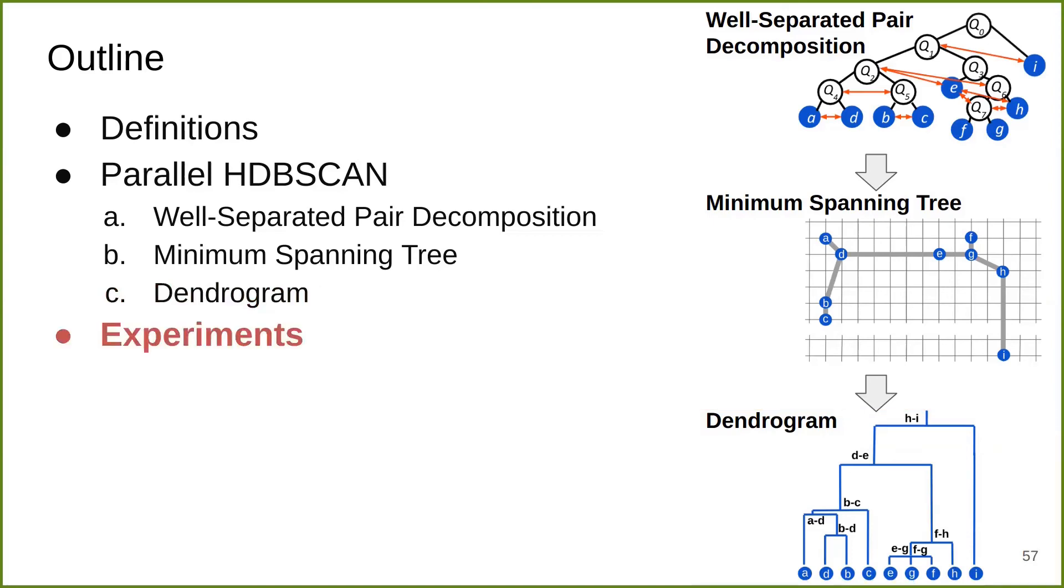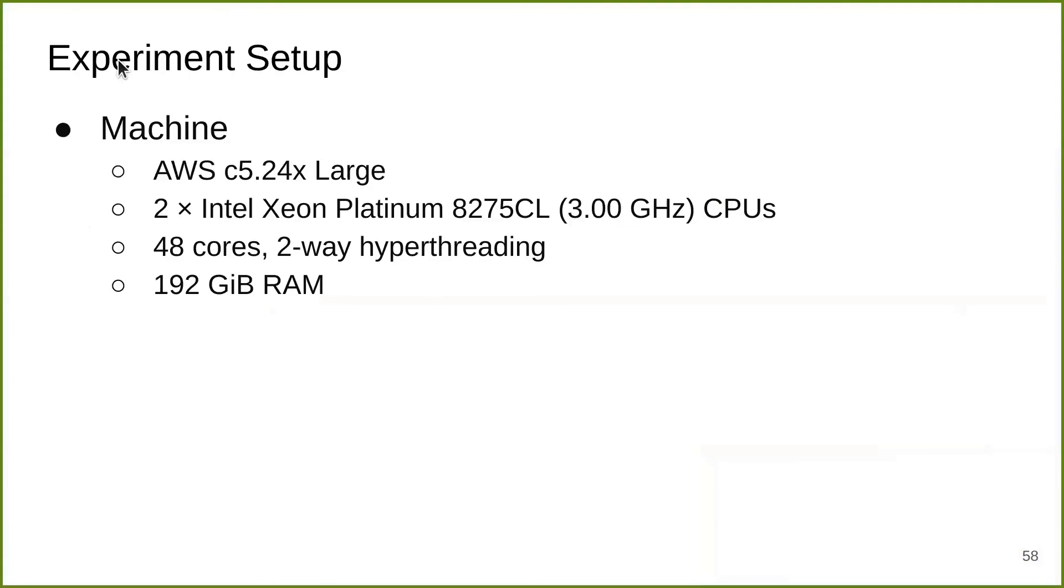Next, I'm going to walk through some experiments. This is our experiment setup. We test on AWS machines with 48 cores and two-way hyperthreading. It has 192 gigabytes of RAM.